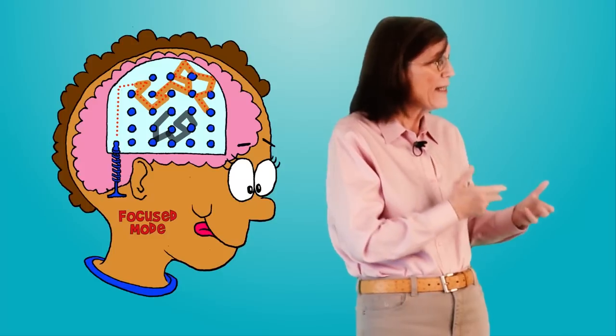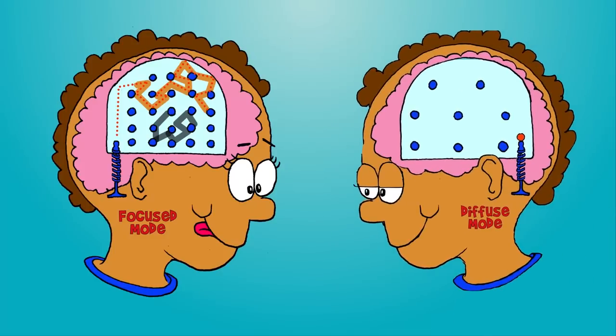And that's represented here by the diffuse mode. Look at how widely spaced the rubber bumpers are. A thought takes off. Look at how it moves widely, bounces around. It can travel a long way before hitting a bumper. In the diffuse mode of thinking, you can look at things broadly, in a very different, big picture way.